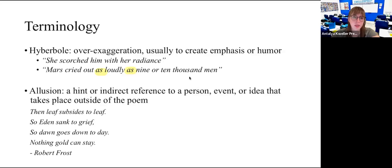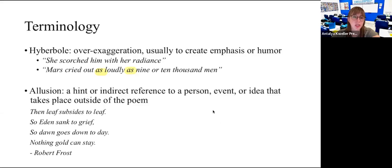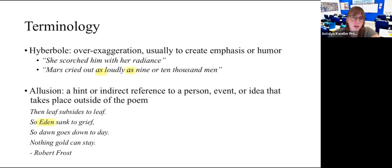And then we have something called an allusion. This is a hint or indirect reference to a person, event, or idea that takes place outside of the poem. In this Robert Frost poem, it says 'then leaf subsides to leaf, so Eden sank to grief, so dawn goes down today, nothing gold can stay.' The allusion is Eden — it refers to the Garden of Eden in the Bible, which is an idea or text that exists outside of the poem.